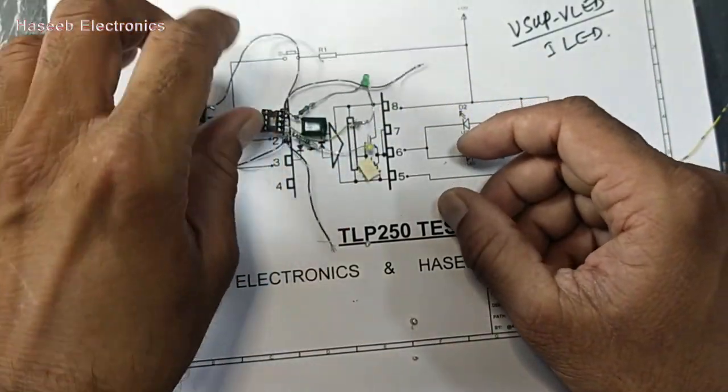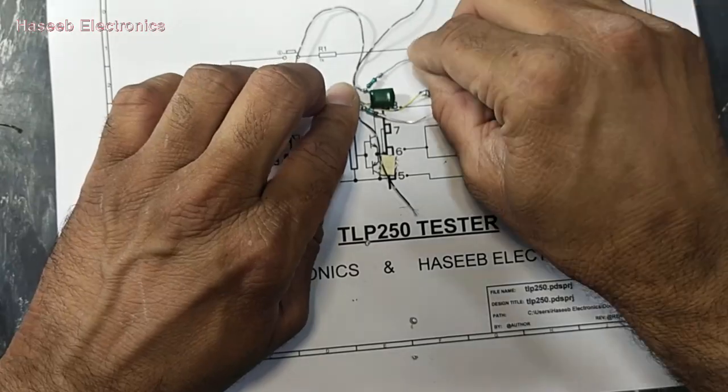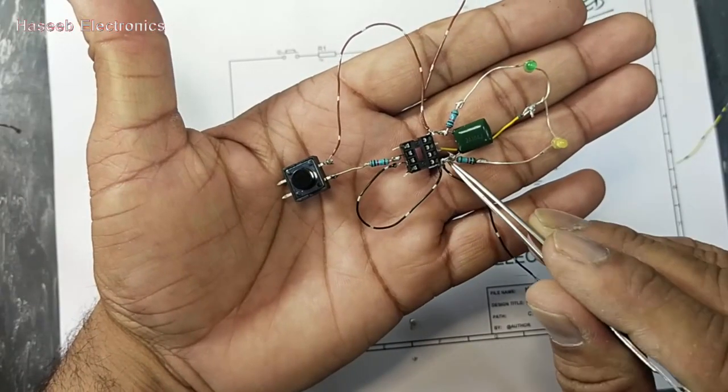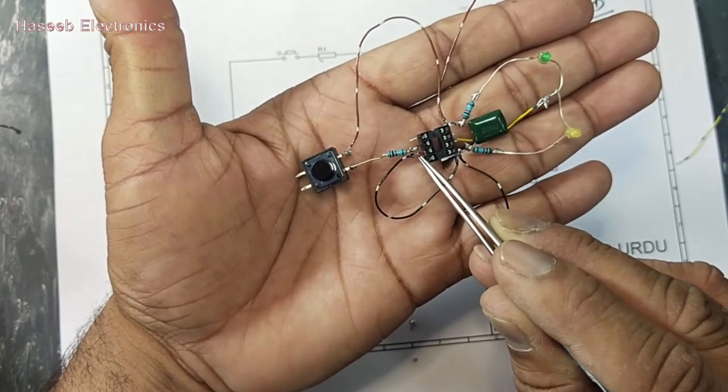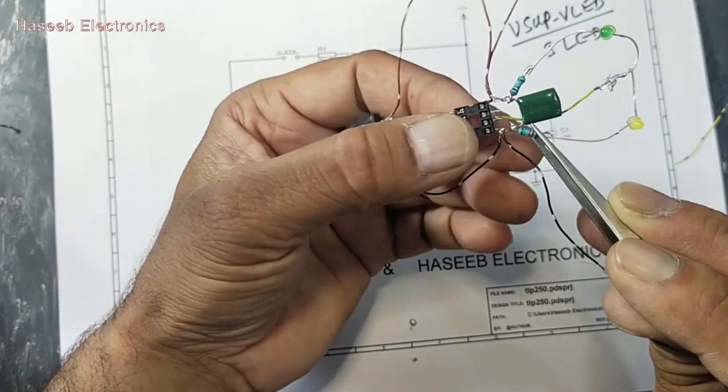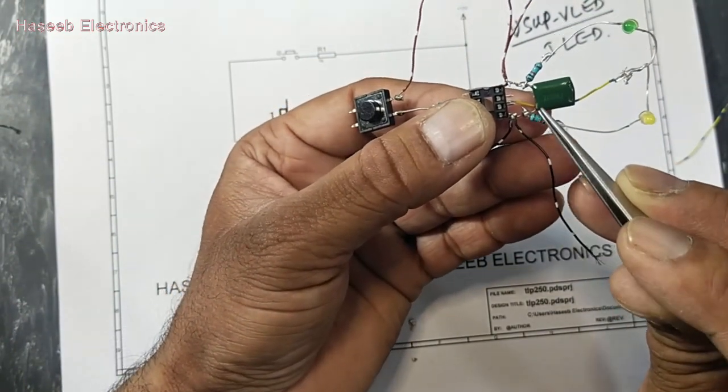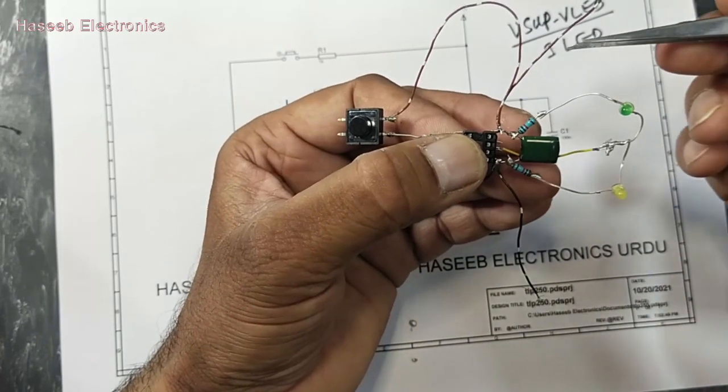Now our TLP250 tester is ready. Pin 5 is ground and ground is connected to pin number 3. At pin 5 I connected the 100 nanofarad capacitor, and the capacitor's second end is connected to pin number 8, which is positive supply.